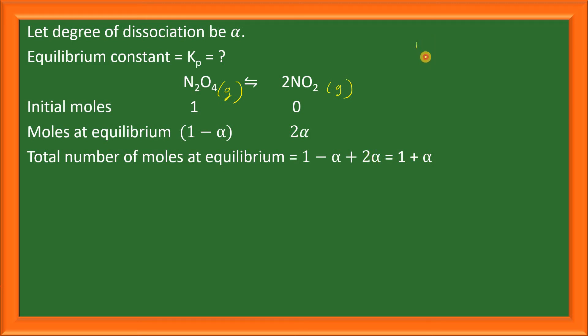We know that the partial pressure of any substance, let it be A, will be equal to the mole fraction of that component in the mixture times the total pressure of the mixture. This is the formula for partial pressure.